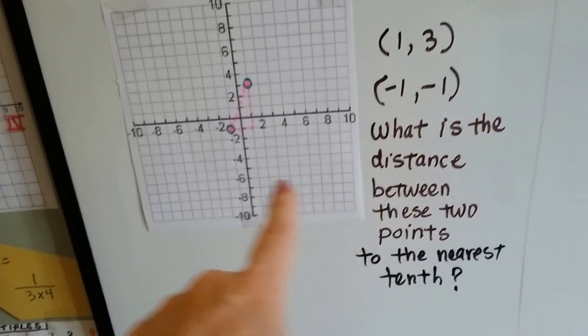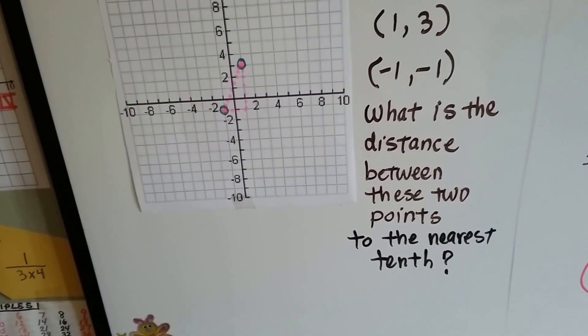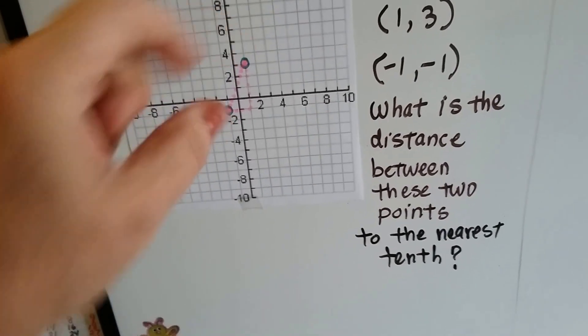One and three. And then negative one, negative one. What's the distance between these two points to the nearest tenth of an inch? So we need to know this distance right here.